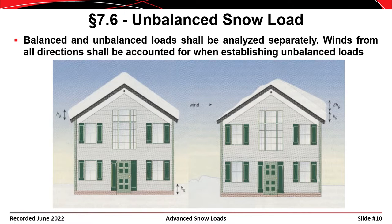H_G represents the balanced snow load, and then there's an additional portion on top of that representing the unbalanced part. So on the left you have the balanced snow load, and on the right you have the unbalanced snow load.